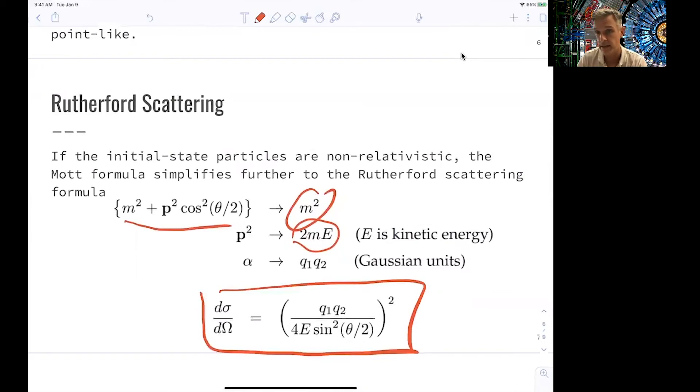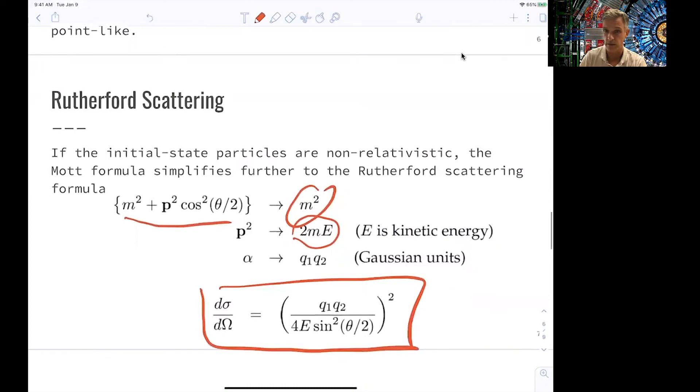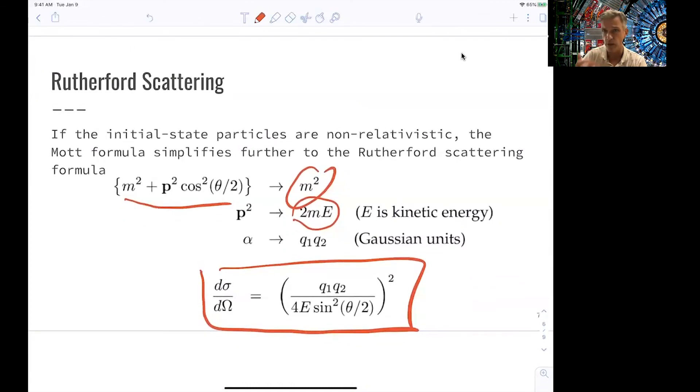The differential cross-section is equal to q1 times q2 divided by 4 times the energy sine square theta half square. And we have seen that already as the Rutherford scattering cross-section when we discuss cross-section measurements in a geometrical kind of sense.